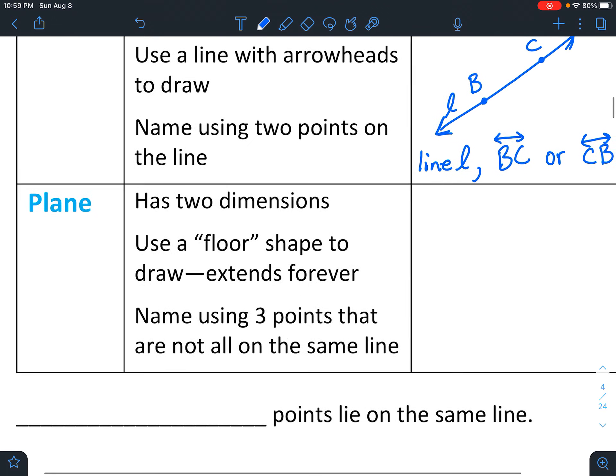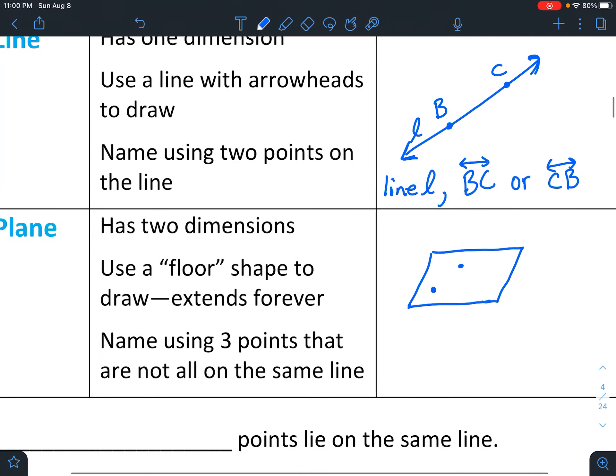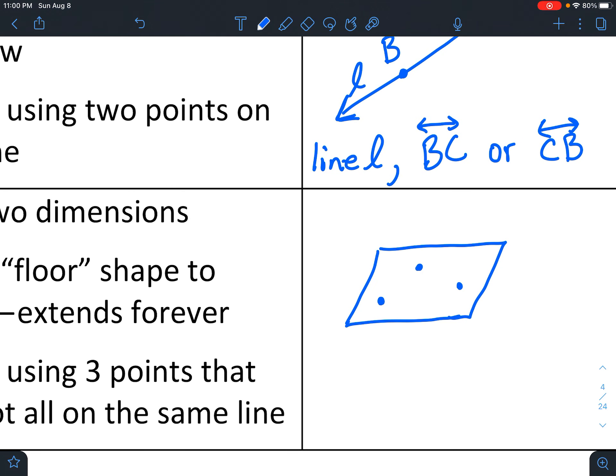And a plane looks almost like a piece of paper. So imagine something like a piece of paper going forever or like a floor going forever in every direction. And the way it's drawn generally is it looks like how you might draw a 3D piece of paper like that. Well, 2D actually, not 3D. And the way it's defined is using three points because three points kind of fix it into place. So let's name these points D, E, F.